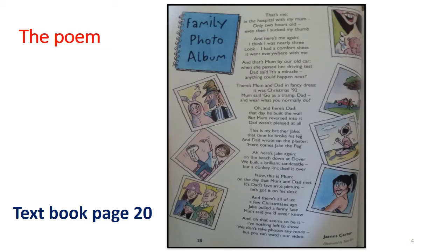Second stanza: 'And here's me again. I think I was nearly three. Look, I had a comfort sheet — it went everywhere with me.' Again in the second stanza, talking about another photo of the same person — the writer. He was nearly three years old and was wearing a comfort sheet that went everywhere with him.